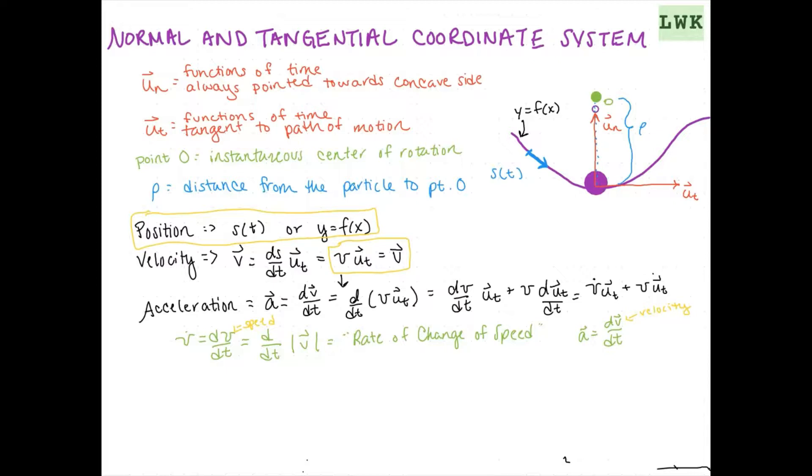Okay, so back to acceleration. So this was the expression we got for A. But really, we want a form for A that looks more like some component times un plus some component times ut. So we're going to write ut is going to be equal to the magnitude of velocity over rho times u of n. And that will allow us to put this into our expression.